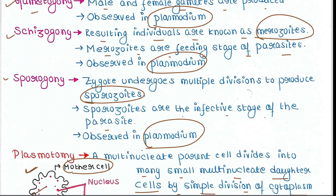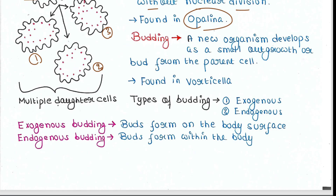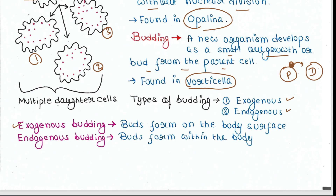Then we have budding. A new organism develops as a small outgrowth or bud from the parent cell. The bud is detached from the parent cell and becomes the daughter cell. This is found in vorticella. Budding is of two types: exogenous budding and endogenous budding. In exogenous budding, buds form on the body surface — exo means outside.